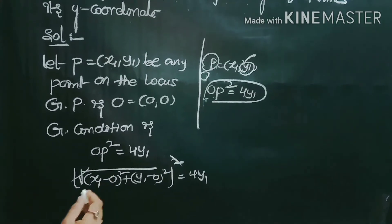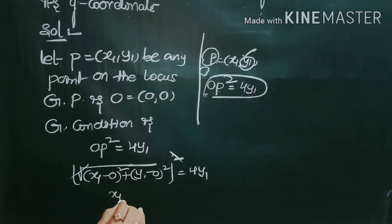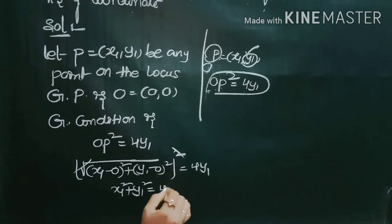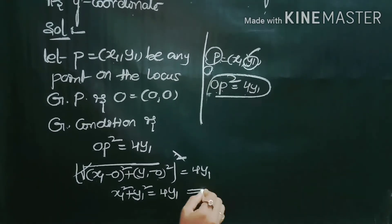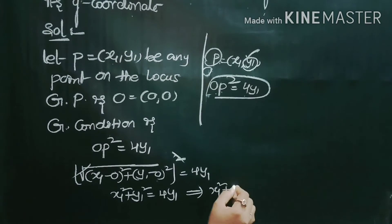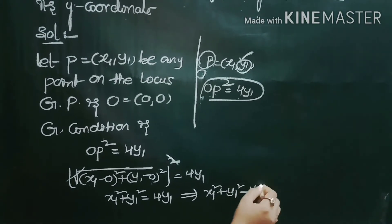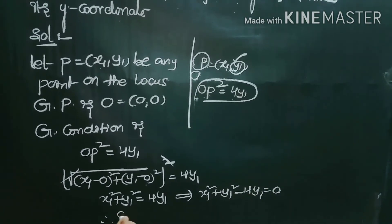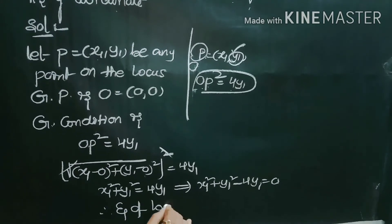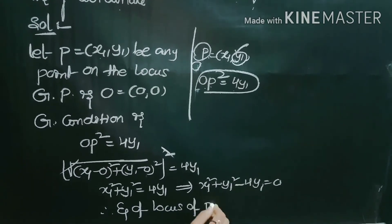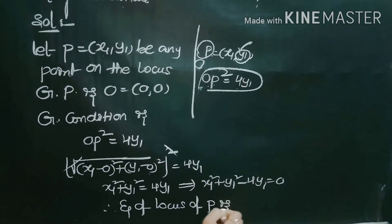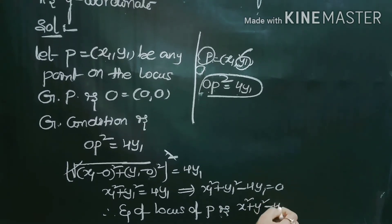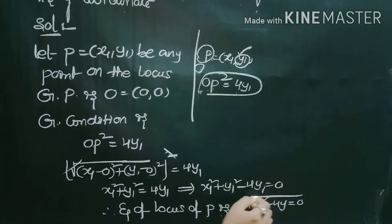After the square root cancels, we get x1² + y1² = 4y1, which implies x1² + y1² − 4y1 = 0. Therefore, the equation of locus of point P is x² + y² − 4y = 0.